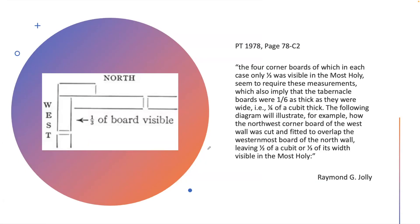Brother Jolly writes that the four corner boards, of which in each case only one-third was visible in the Most Holy, seem to require these measurements, which also imply that the tabernacle boards were one-sixth as thick as they were wide—that is, one-quarter of a cubit thick.